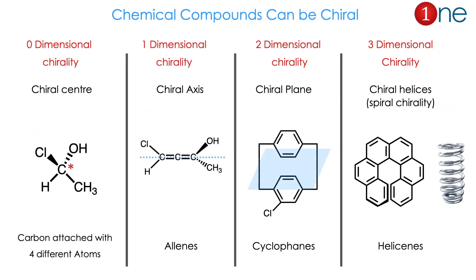Chemical compounds can also be chiral, but chirality in chemistry comes in different dimensions: zero dimension, one dimension, two dimension, and three dimension. Zero dimension is the most well-known — a chiral compound has four different attachments on a carbon center.